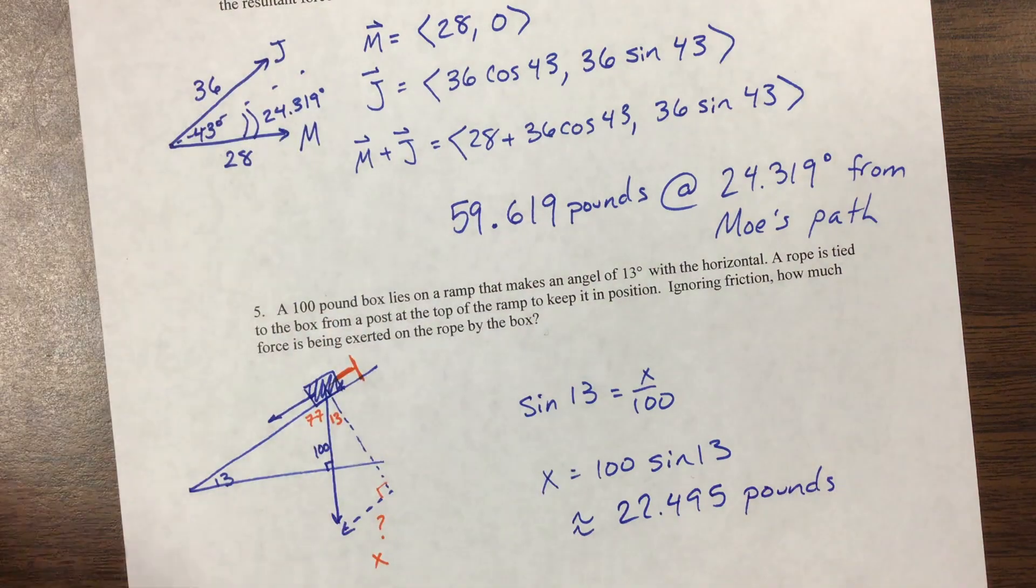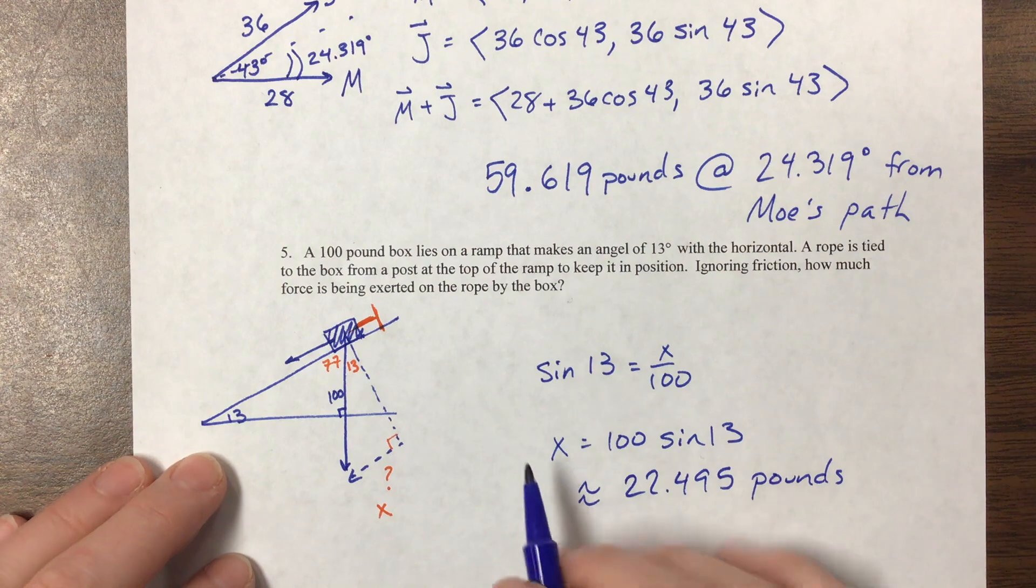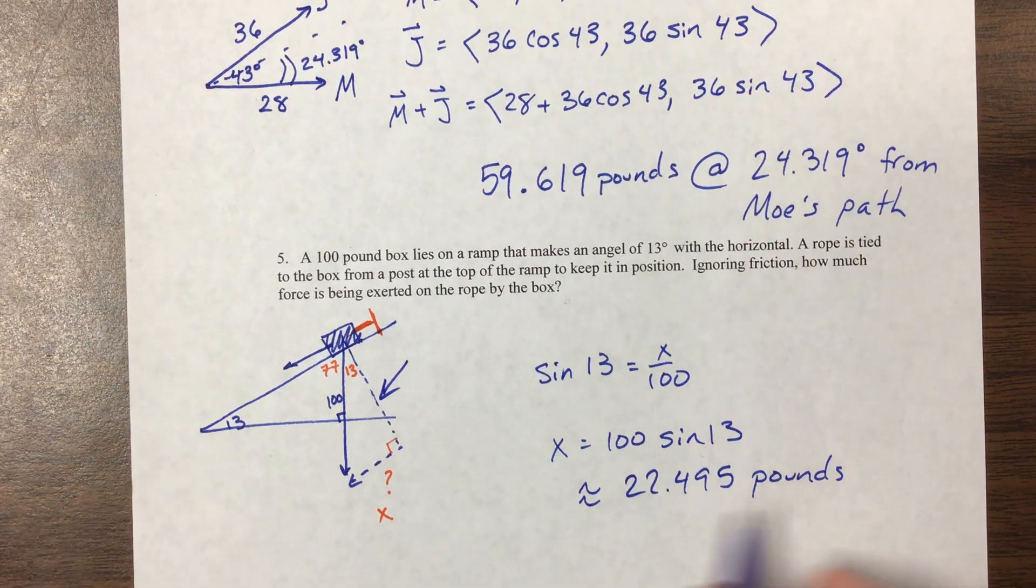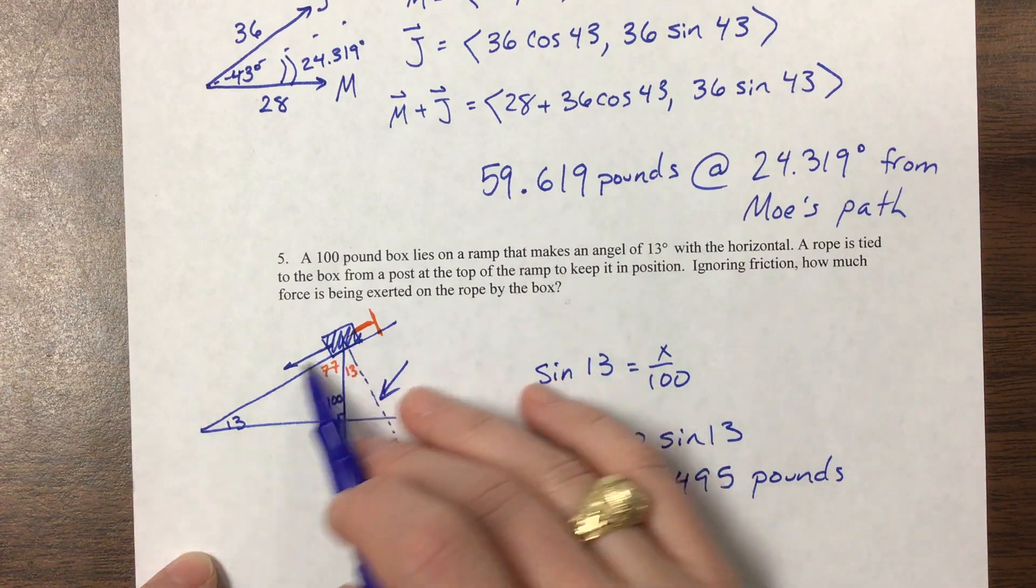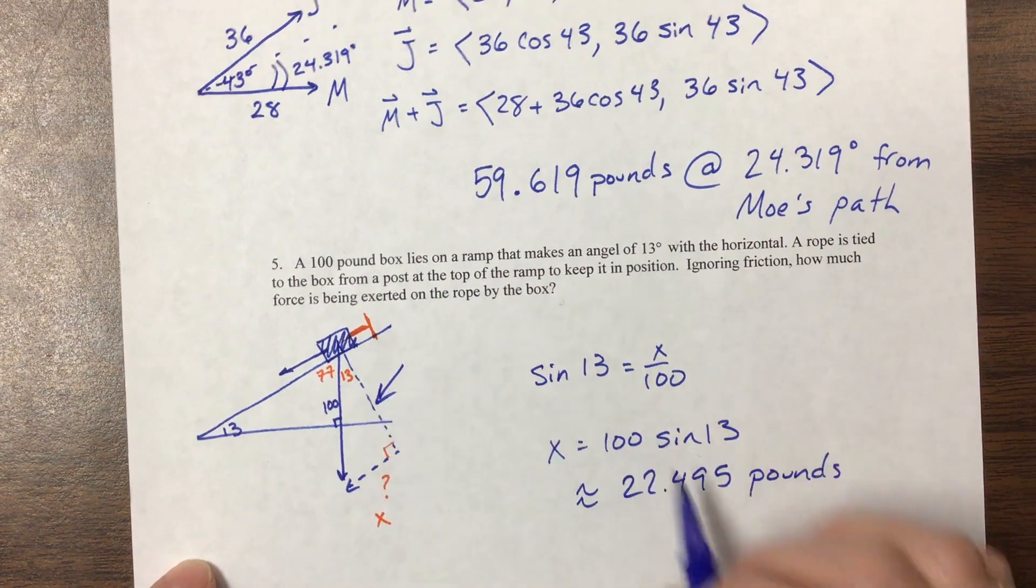Sometimes they'll also say what's the force holding it onto the ramp, and the force holding it onto the ramp becomes this one right here. That's holding it down, this is the force that's pulling it down the ramp versus holding it onto the ramp, and this one we would use with cosine.